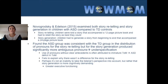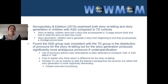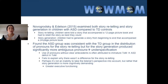In 2015, Novogrodsky and Edelson examined both story retelling and story generation in children with ASD compared to typically developing controls. For story retelling, children were told a story accompanying a 12-page picture book and then retold it. For story generation, they told a story from beginning to end using a 24-page picture book. They found the ASD group was consistent with the TD group in pronoun distribution for story retelling; however, for story generation, the ASD group produced significantly more ambiguous pronouns — evidence for under-specification. The use of pronouns without clear antecedents is common in young children and is often attributed to an immature theory of mind, which would be consistent with a theory that ASD involves a deficit in theory of mind.